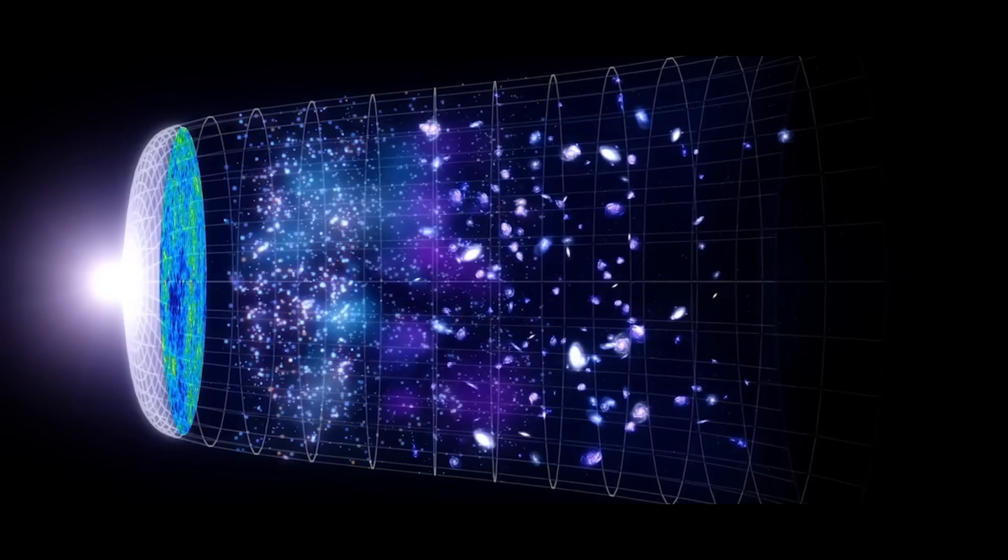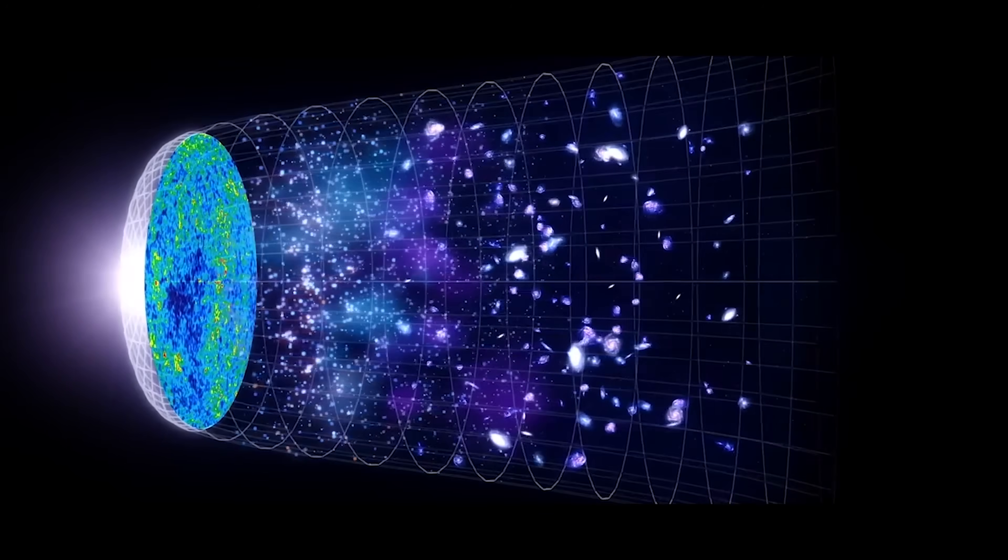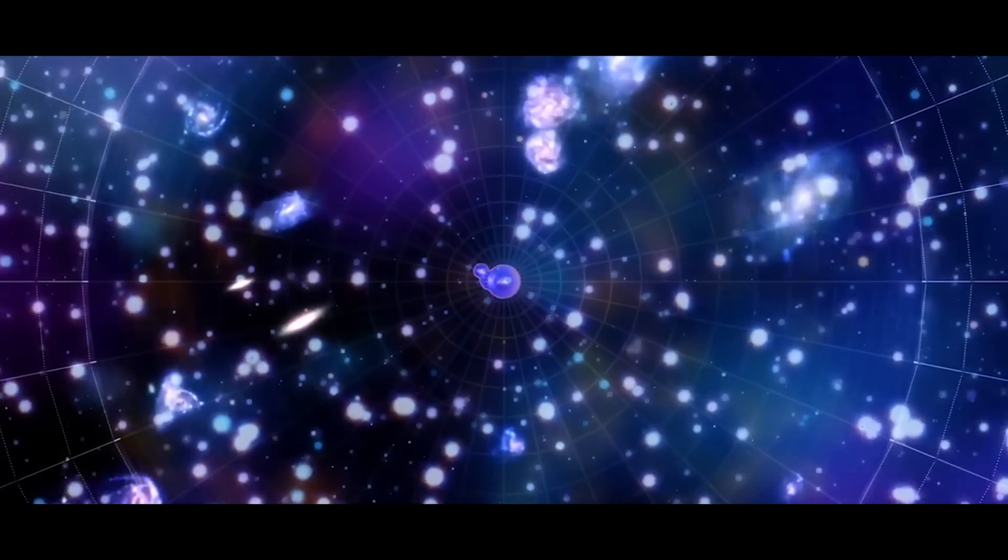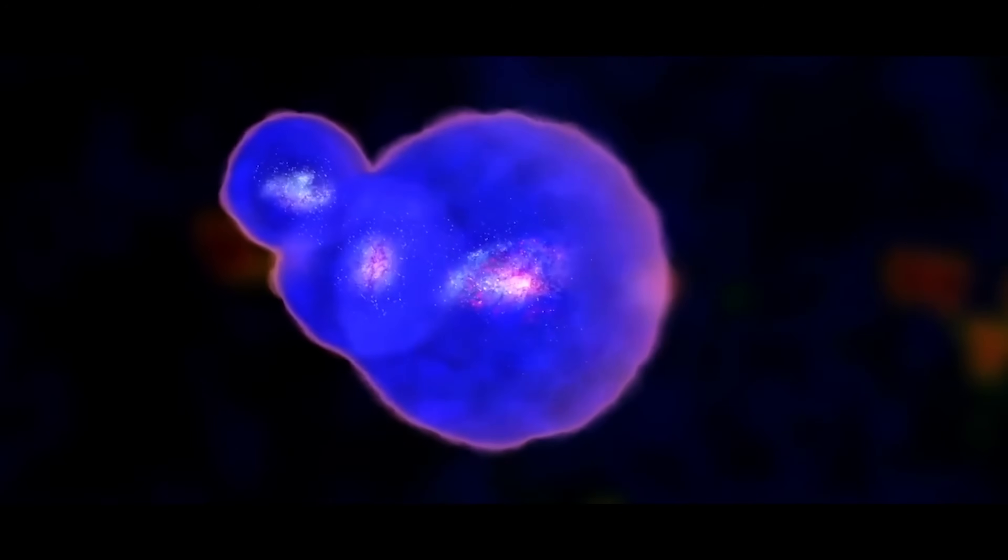The first stars formed in the universe, and we can actually do this because light takes time to travel to us at a set speed limit. As we look back at more distant objects, we're seeing them as they were when the universe was much younger.